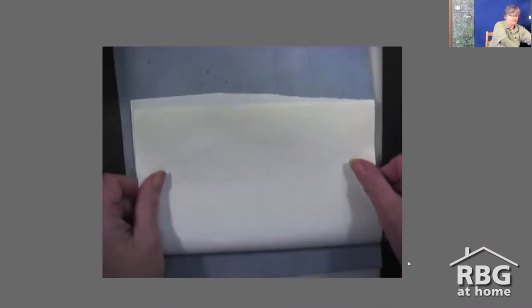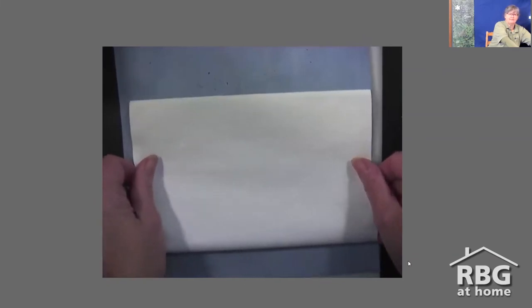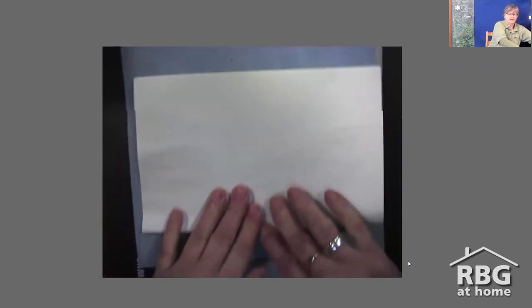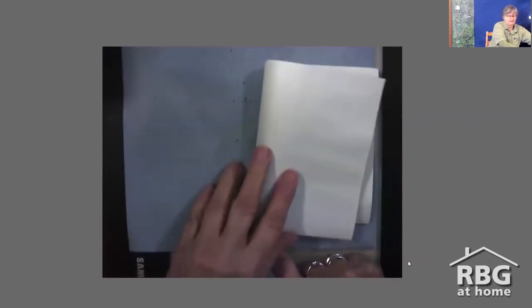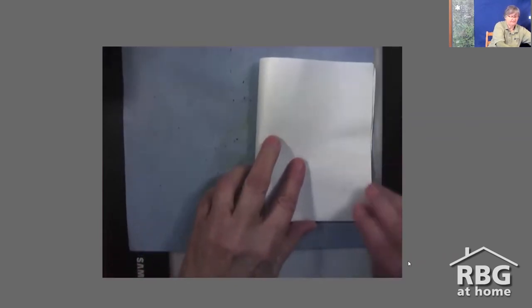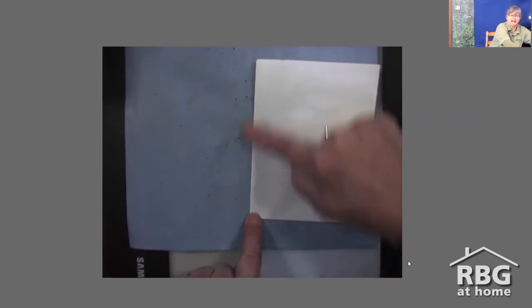We're going to start by folding this paper in half, bottom to top like that, with a good crisp line like all origami has to have. Then we're going to fold left to right, and again, another good crisp fold like that.